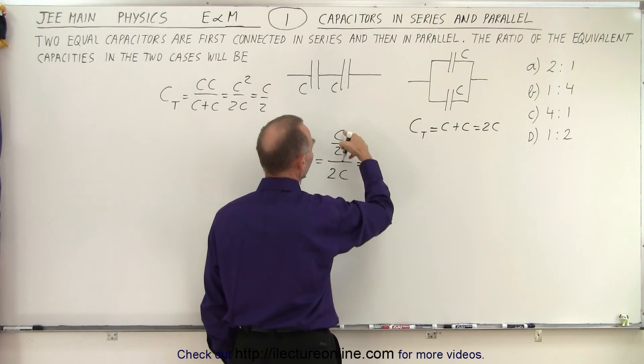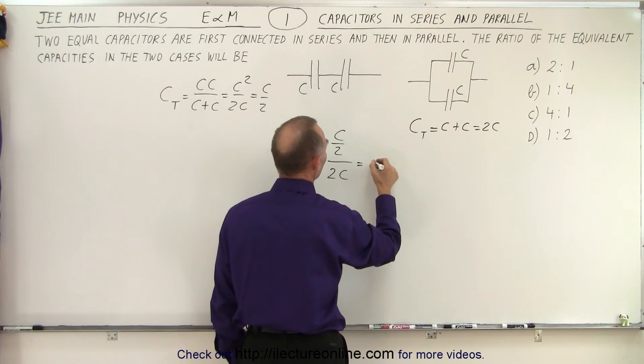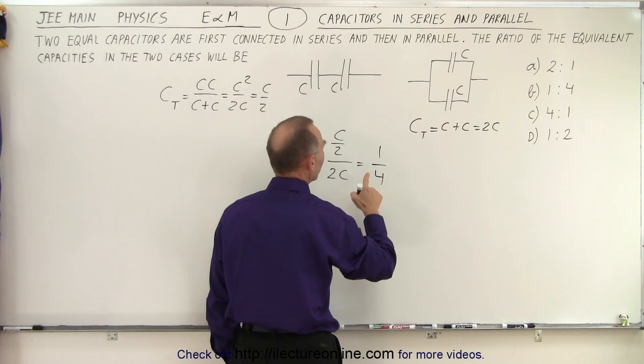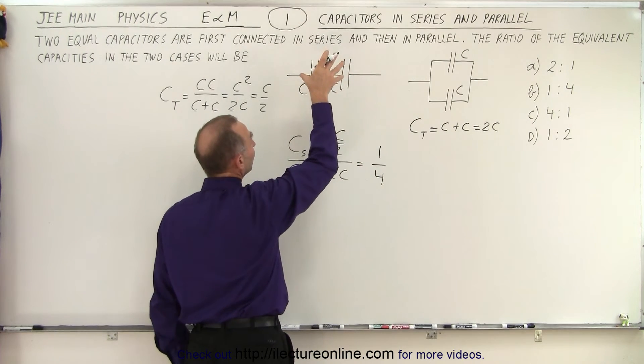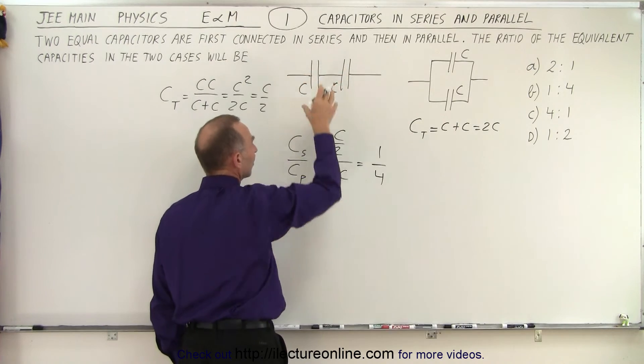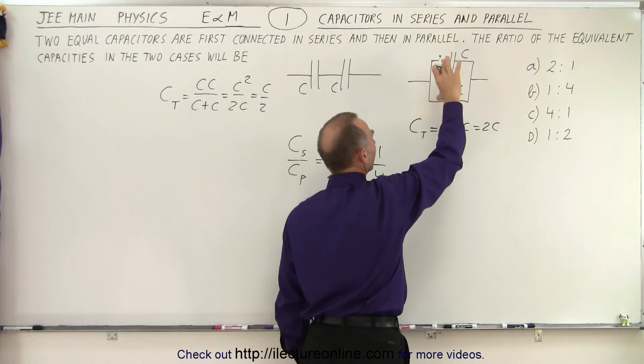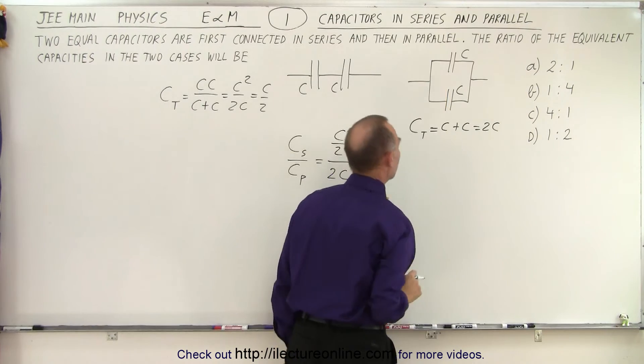And this becomes C divided by C. Of course, that cancels out. And this is equal to 1 over 4. So the ratio is 1 to 4. The capacitance of the two capacitors in series is only 1 quarter the capacitance when you take the very same two capacitors and put them in parallel.